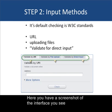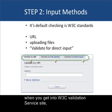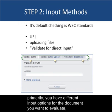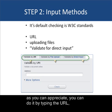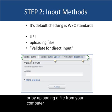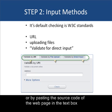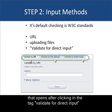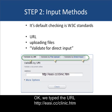Here you have a screenshot of the interface you see when you get into the W3C Validation Service site. You have different input options for the document you want to evaluate. You can do it by typing the URL, by uploading a file from your computer, or by pasting the source code of the web page in the text box that opens after clicking the tag Validate for Direct Input. We typed the URL: http://easi.cc/clinic.htm.